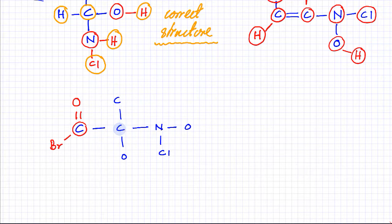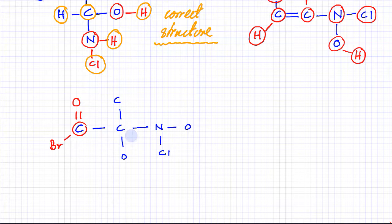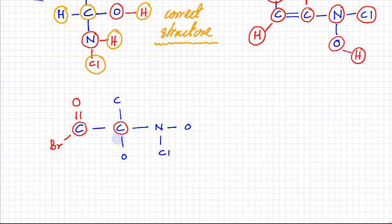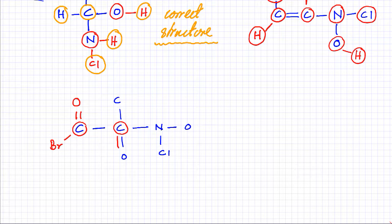Looking at the second carbon: it's making one bond here, one here, one on this side, and one on this side — four bonds total, so it's correctly drawn. Looking at the oxygen attached to it: it's supposed to make two bonds. I could put a double bond here, but that would make carbon make five bonds, which is not possible. So oxygen should have a single bond to carbon, and the second bond should be made elsewhere with a hydrogen atom.